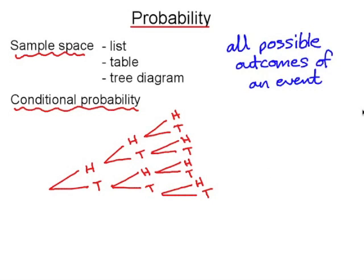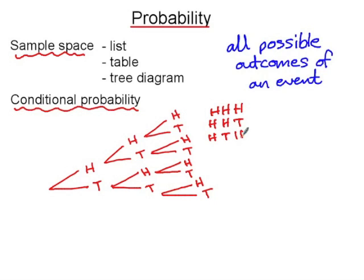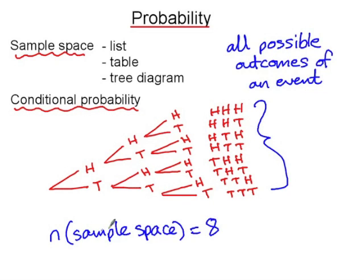But again, if you just tried to list them all, you could easily repeat one or forget one. A tree diagram is a systematic way of creating that list. So if we read along the branches, the first is head, head, head, head, then head, head, tail, and so on. And so we can see that there are eight possible outcomes. And we can say that the size of the sample space here is eight. And the notation for that is n(sample space) = 8. The number of elements in the sample space is eight.